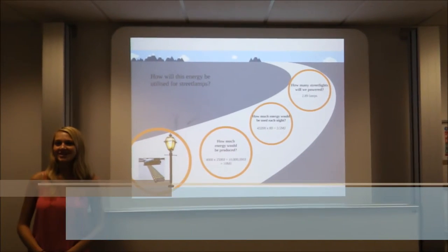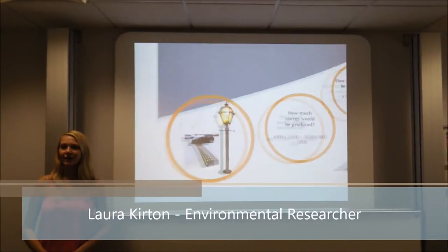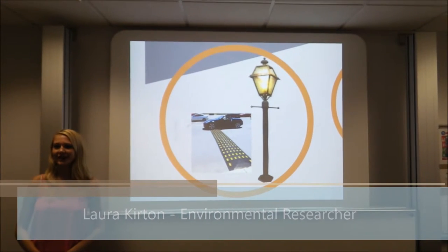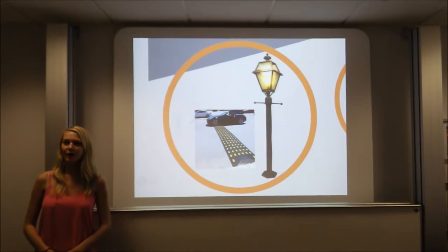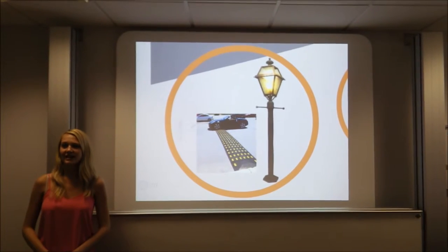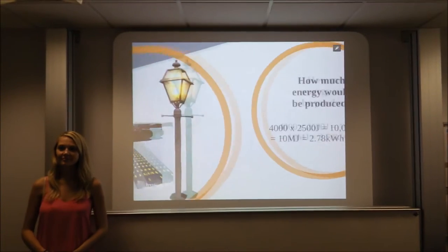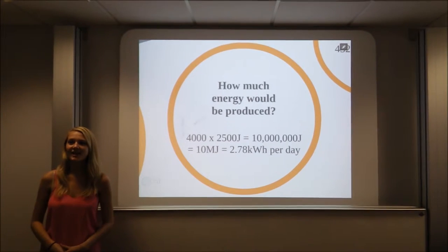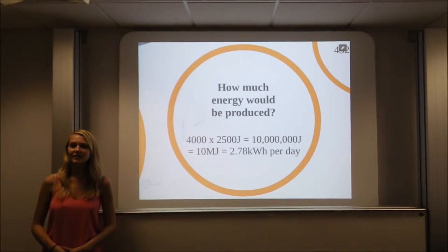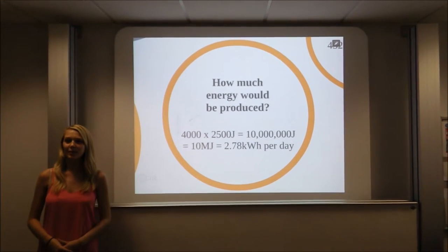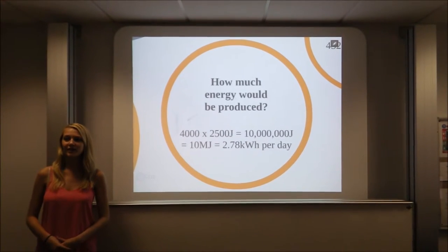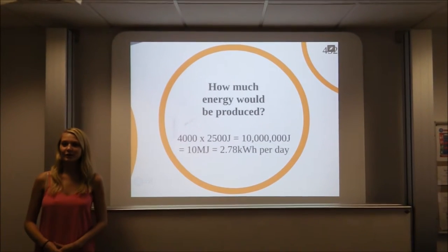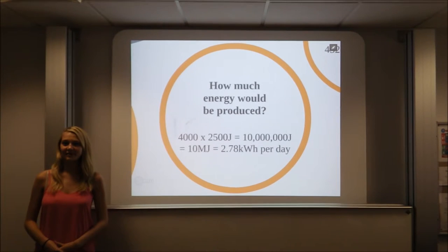How will this energy be utilised for street lamps? From the government's annual road traffic estimate in 2013, a minor 30 mile per hour road with speed bumps along it is estimated to have 4,000 cars travel on it a day. From this, we can say that over the course of a day, an energy generating speed bump would produce 4,000 cars times 2,500 joules, which equals 2.78 kWh per day.